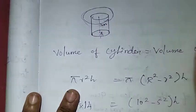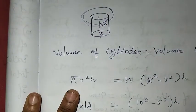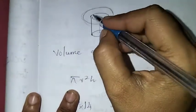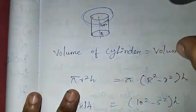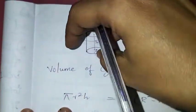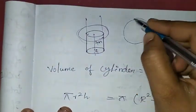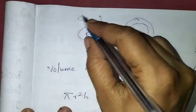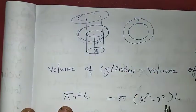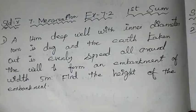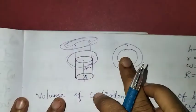The embankment has a width of 5 meters. The inside of the embankment is empty — it is a hollow cylinder. We need to find the height of the embankment, that is, the hollow cylinder height.